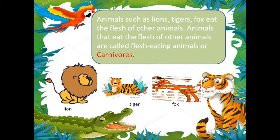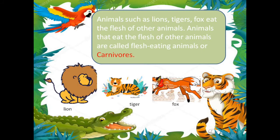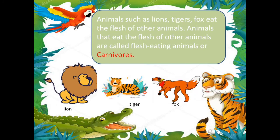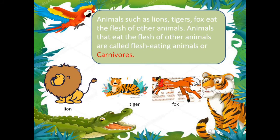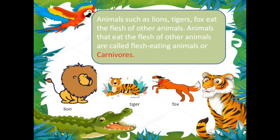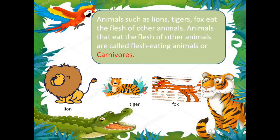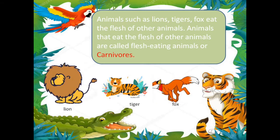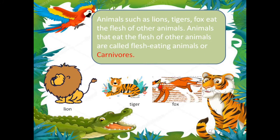Animals such as lions, tigers, fox etc. eat the flesh of other animals, and these animals are known as flesh-eating animals. F-L-E-S-H. They are called either flesh-eating animals or, in one particular word, they are known as Carnivores. C-A-R-N-I-V-O-R-E-S.